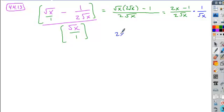And when I simplify, I have 2x minus 1 in the numerator, 2 root x times root x just leaves me with 2x in the denominator.